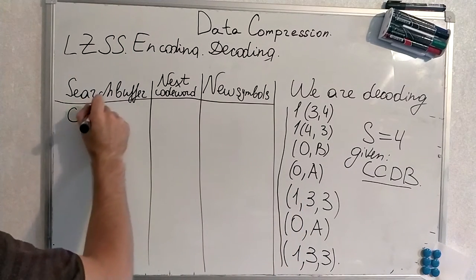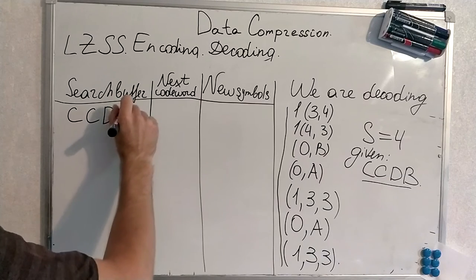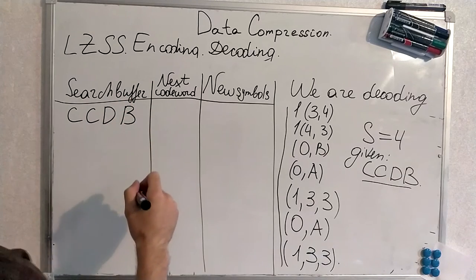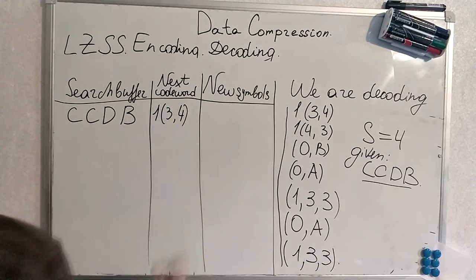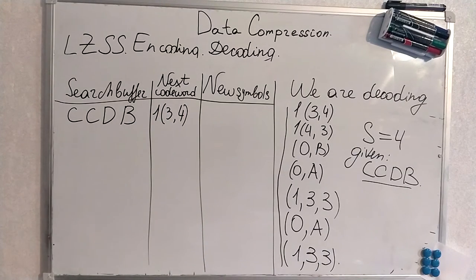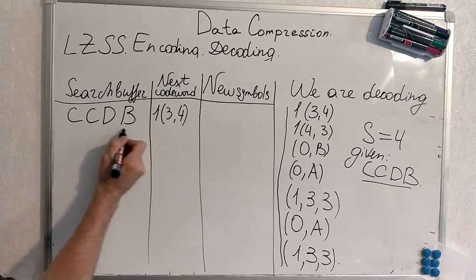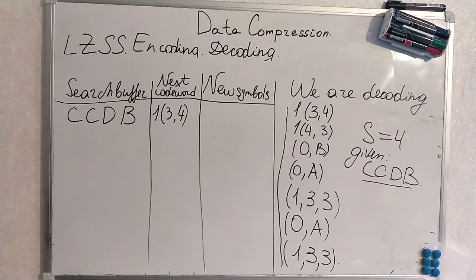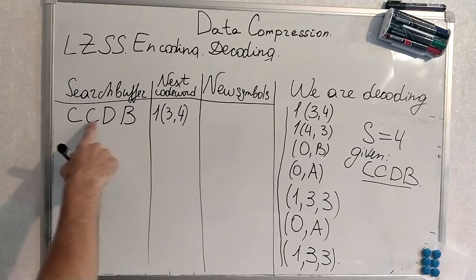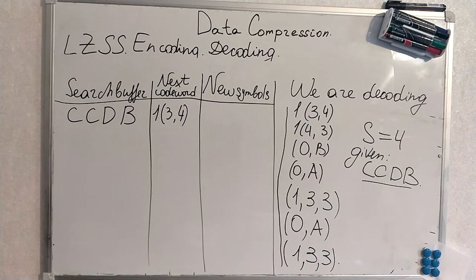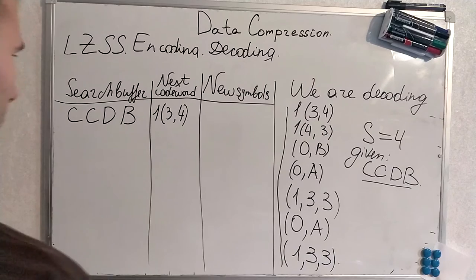Search buffer is CCDB. Next code word is 1, 3, 4. New symbols. So, we see that offset is kind of strange. Why? Because we have 3 offset and 4 length. But we already know how to fix this problem.